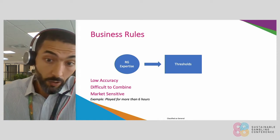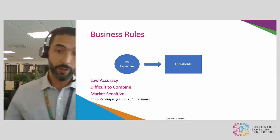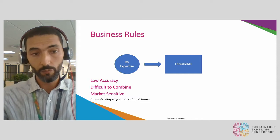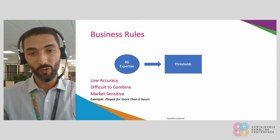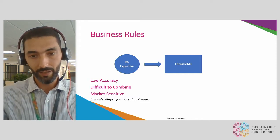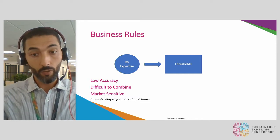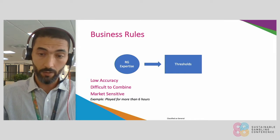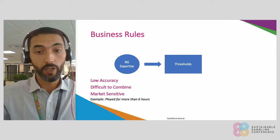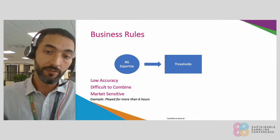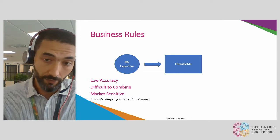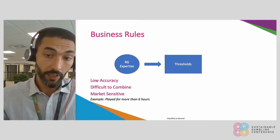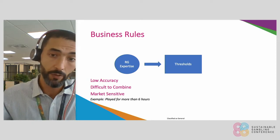It's difficult to combine multiple thresholds into one risk score, and it's also market sensitive. For example, if you say let's take players who lose more than 5K, that value is different for a Londoner than it is for somebody in Romania.